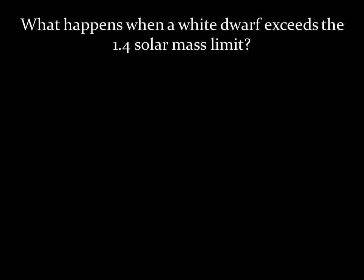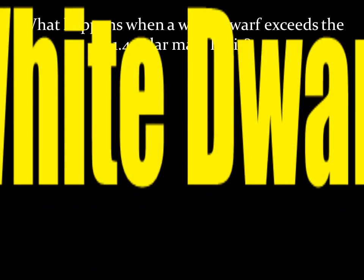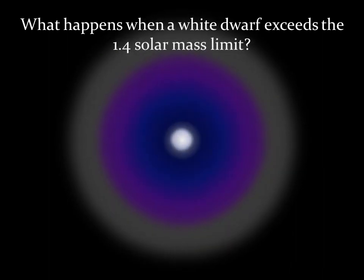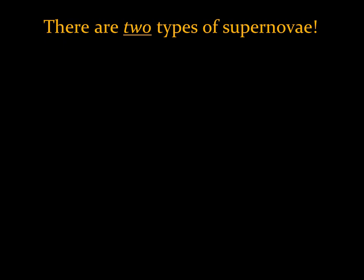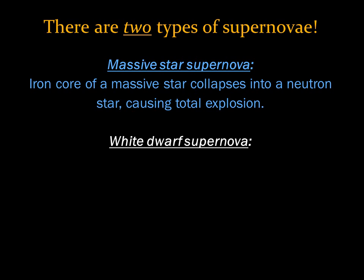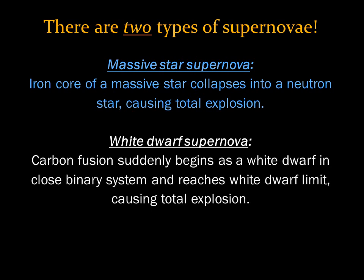What happens when a white dwarf exceeds the 1.4 solar mass limit? We get a white dwarf supernova. There are two types of supernovae — massive star supernovae, where the iron core of a massive star collapses into a neutron star causing a total explosion, and white dwarf supernovae, which are different. A white dwarf is made mostly of carbon, and if it's in a binary system taking mass from its companion, it can approach the Chandrasekhar limit. At that point, its temperature rises enough for carbon fusion to begin, which ignites almost instantly throughout the white dwarf, creating a detonation similar to the helium flash but with far more energy.